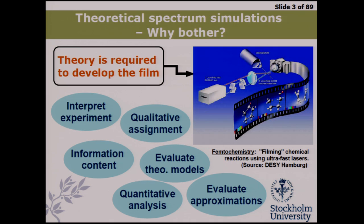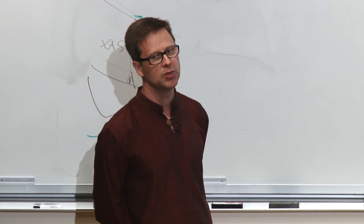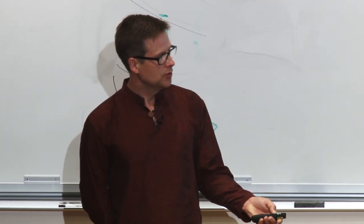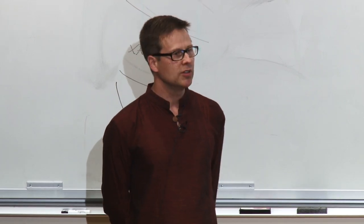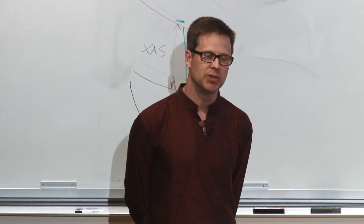You can have quantitative analysis where you really do it number by number and try to be as accurate as possible. In many experiments that's simply not possible, and we have to resort to some sort of qualitative assignment. It all comes down to defining the information content — why do you use a certain spectroscopic technique? Theory can help a lot to define all the features and all the possible effects, and what is actually possible to get out from the experiment. From my point of view, it also goes into evaluating different models and approximations.